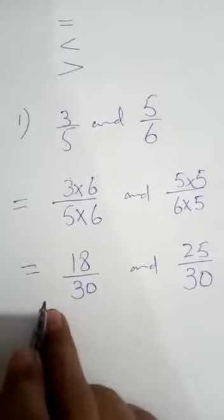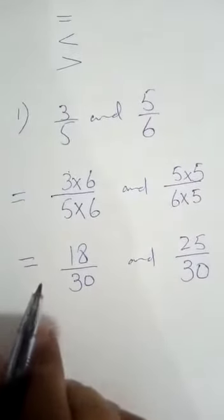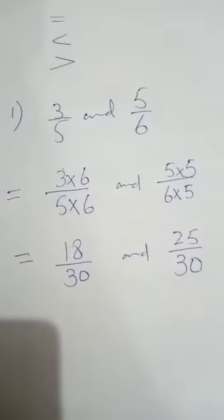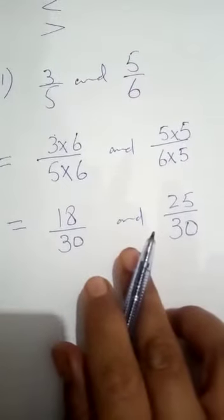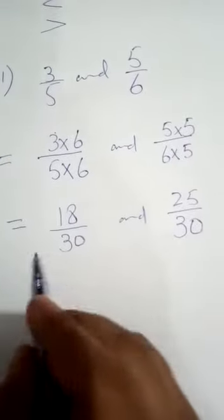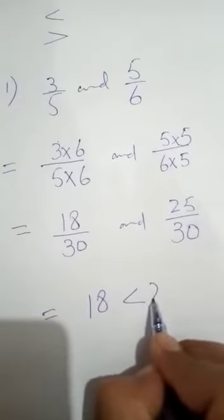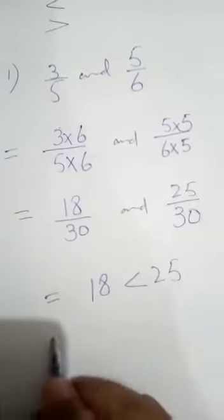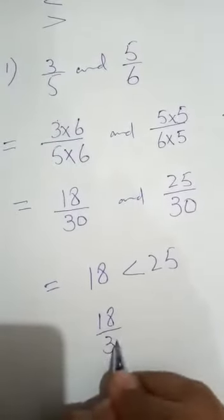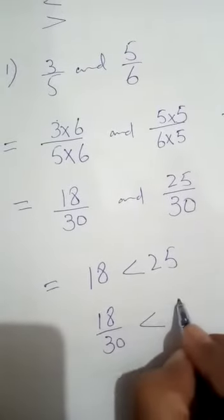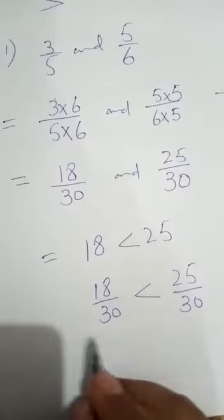Now the denominators are the same — rule number one is satisfied. Then we compare according to the numerators. Since 18 is less than 25, we write: 18/30 is less than 25/30.